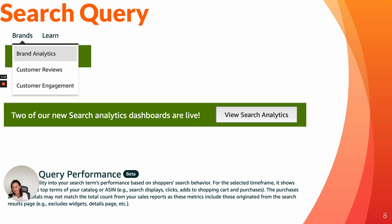A limitation of the report is that it is not on the ASIN level. So if you sell five different versions of a purple pin you're going to have to make assumptions about the data — you're not going to be able to say hey my hero ASIN is performing like this versus my newly launched ASIN is performing like this.